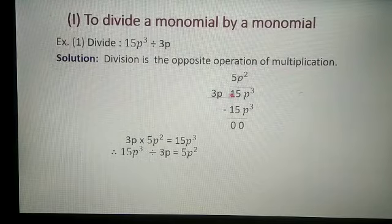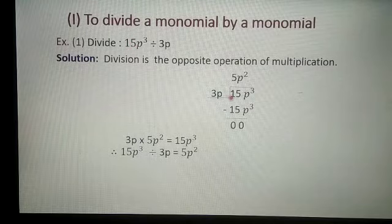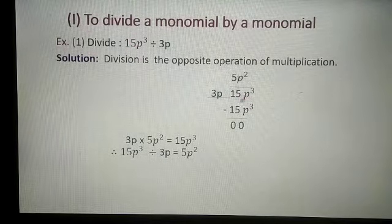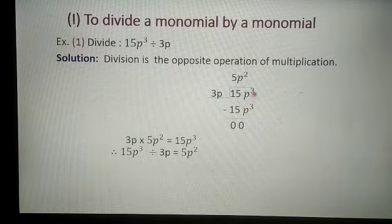First we will divide this example. This is the division sign. Now, 15p cube is divided by 3p. Both are monomials — 3p is a monomial and 15p cube is also a monomial.